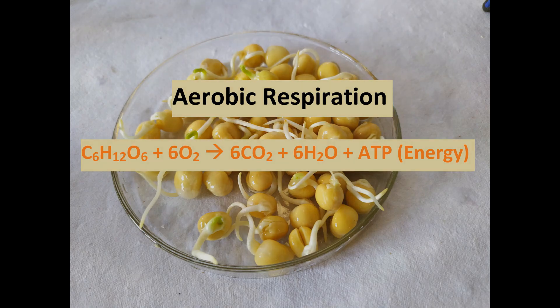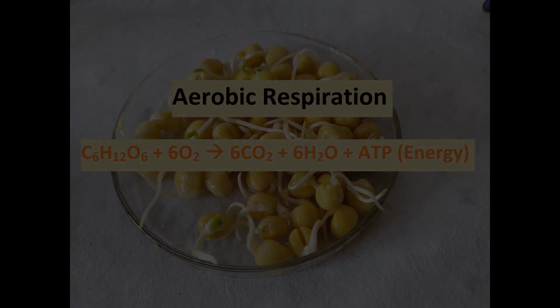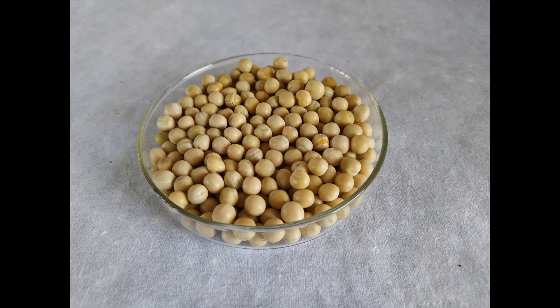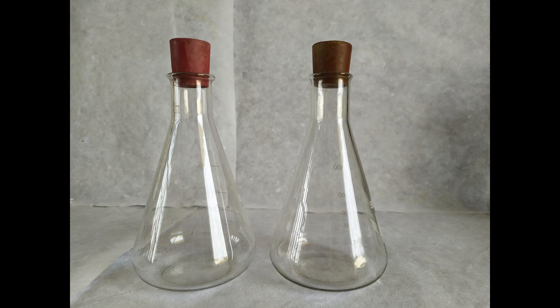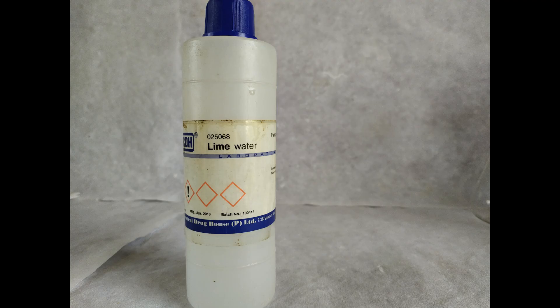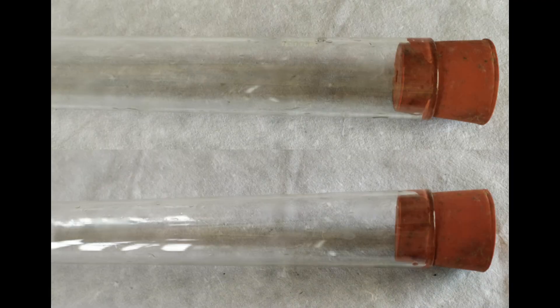For this experiment, we'll be needing the following: seeds pre-soaked in water, dry seeds, two identical flasks with rubber corks, filter papers or cotton pads, lime water, and two test tubes with rubber corks.